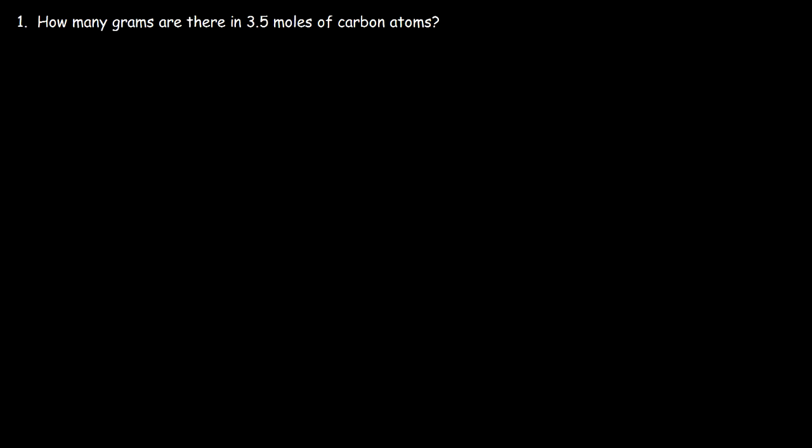Number one: how many grams are there in 3.5 moles of carbon atoms? The first thing you want to do is identify the molar mass of carbon. If you go to the periodic table, you'll see that carbon has an atomic number of 6 and a mass number of 12.